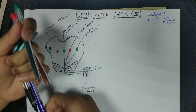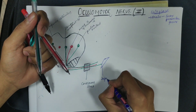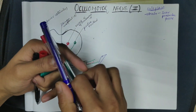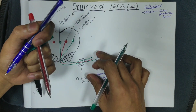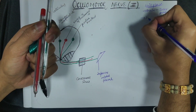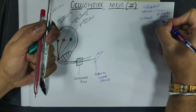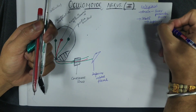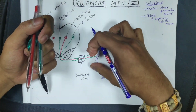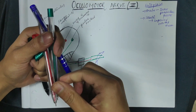The three fibers pass through the superior orbital fissure. This is the exit place from the skull — the superior orbital fissure is where the fibers exit from the brain cavity.